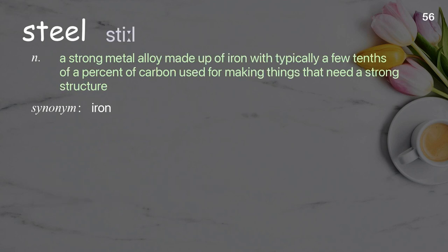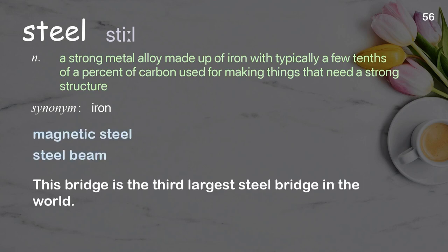Steel: a strong metal alloy made up of iron with typically a few tenths of a percent of carbon, used for making things that need a strong structure. Examples: magnetic steel, steel beam. This bridge is the third largest steel bridge in the world.